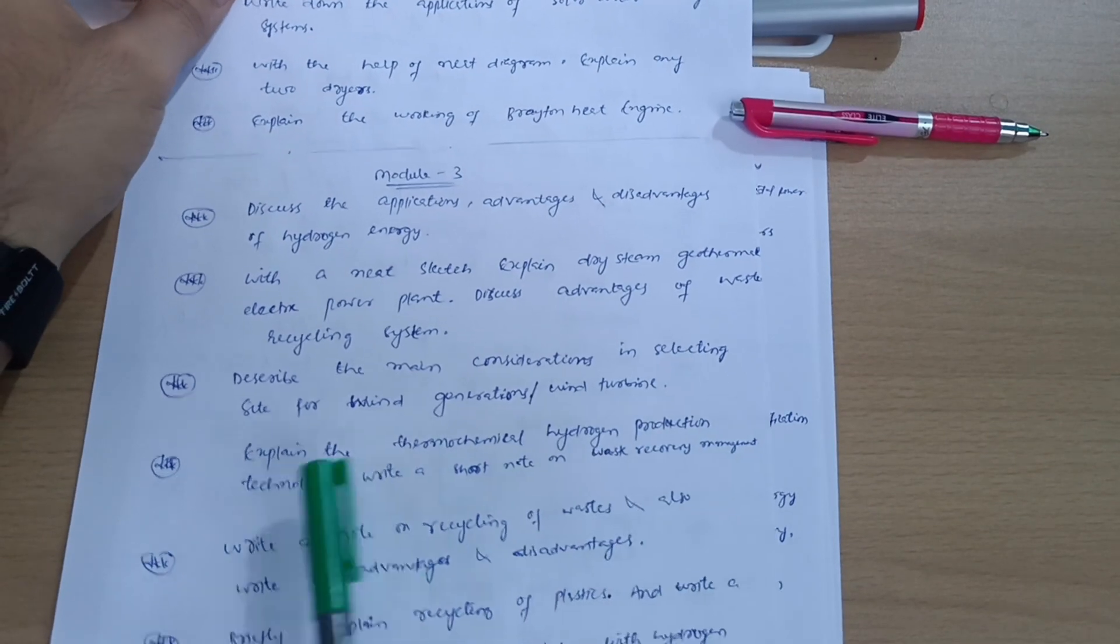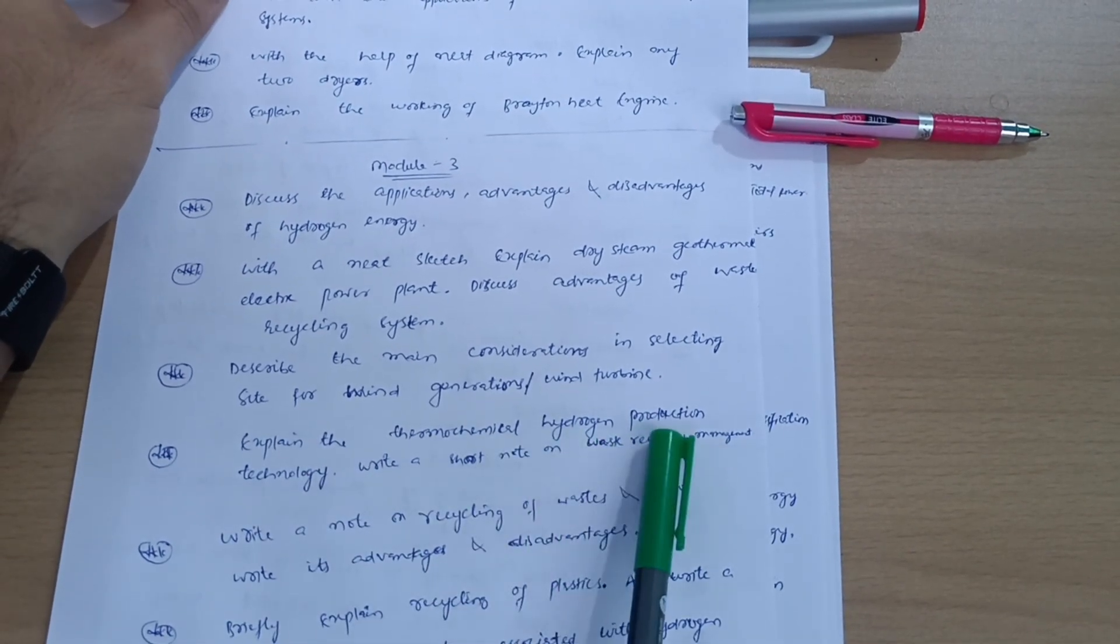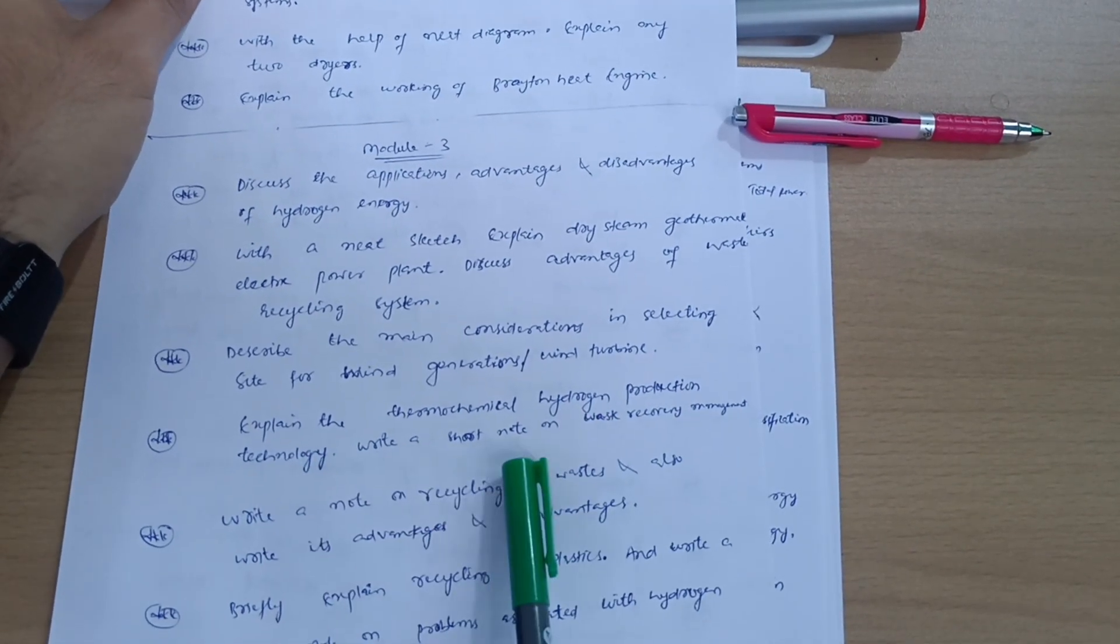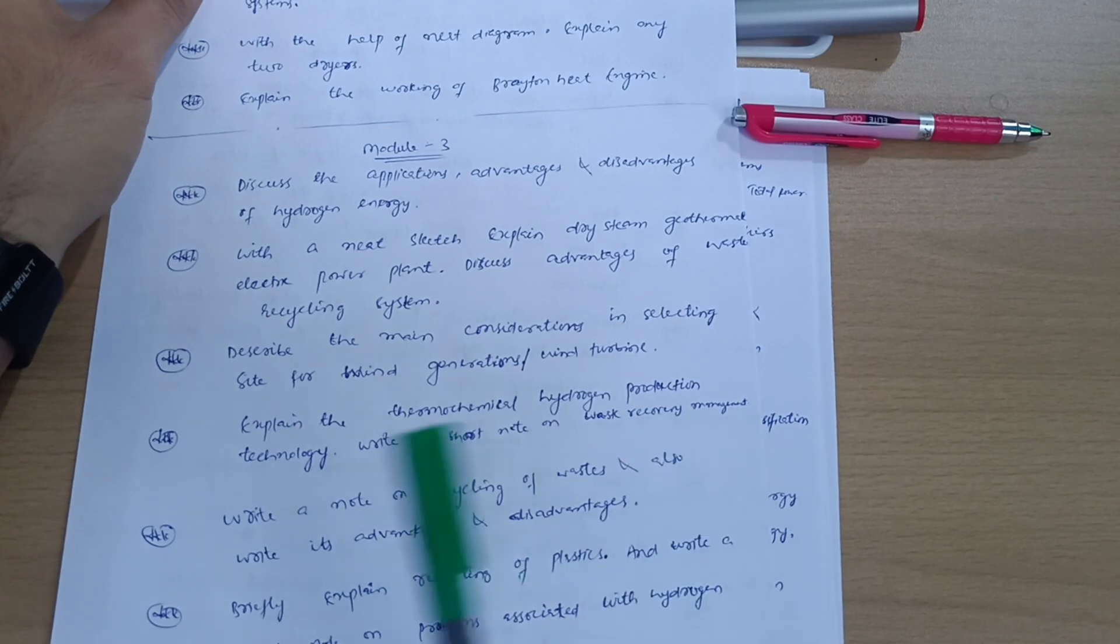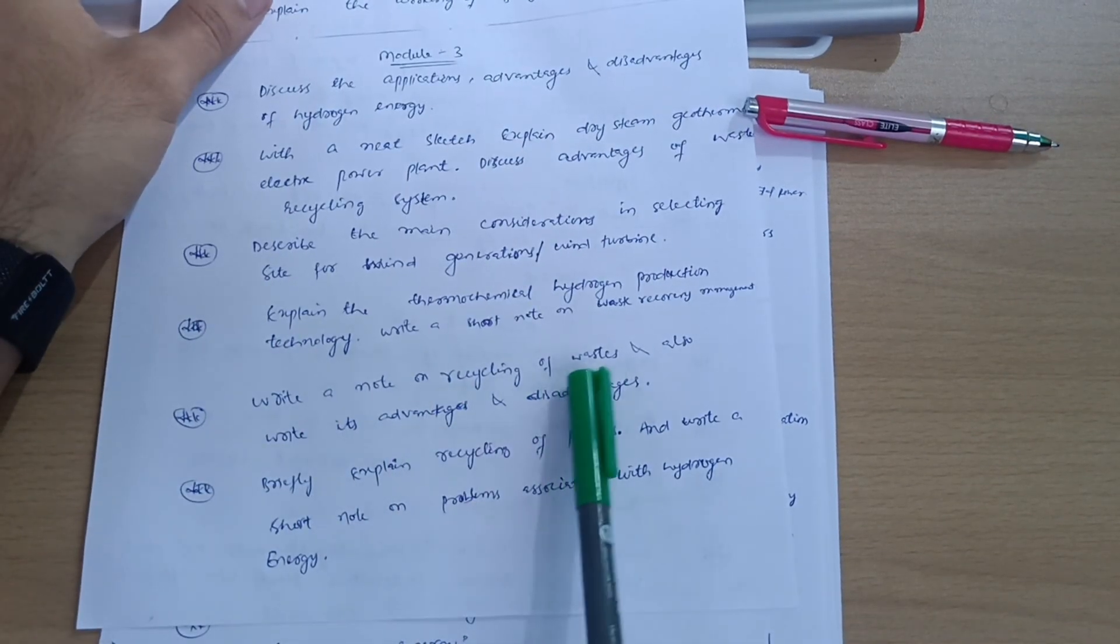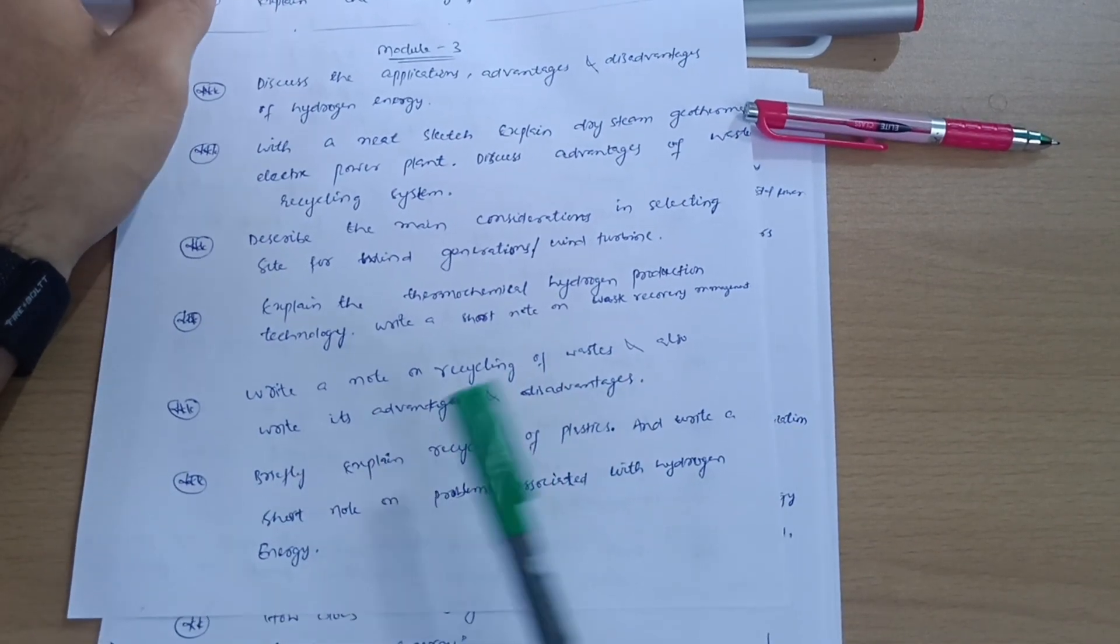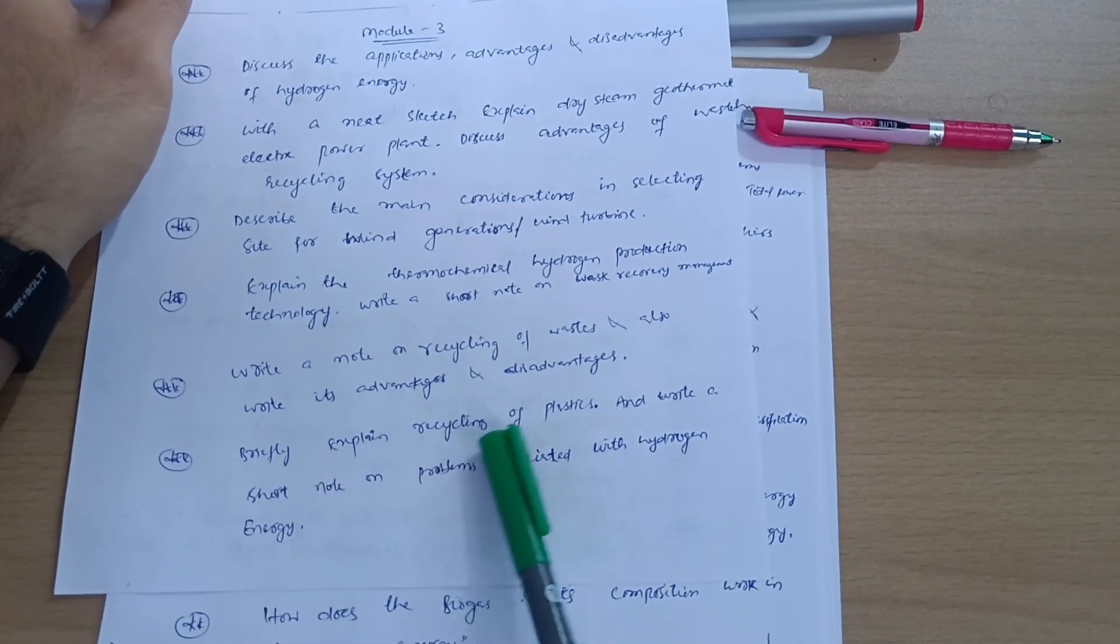Explain the thermochemical hydrogen production technology. Write a short note on waste recovery management. Write a note on recycling of wastes and also write down its advantages and disadvantages. Lastly, explain recycling of plastics.